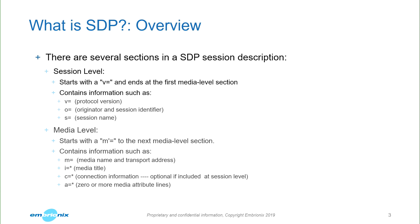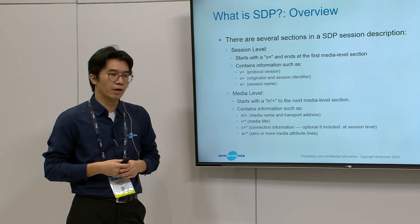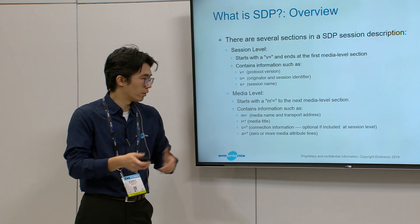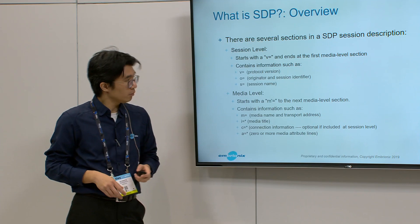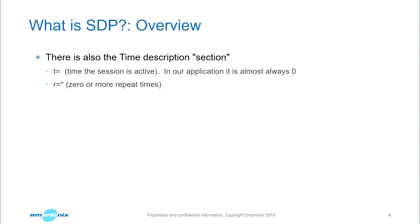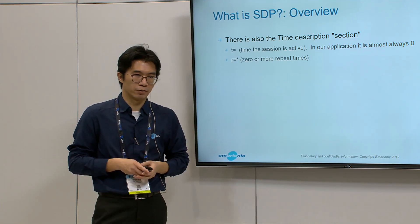The media level — this is where it's most interesting for everyone doing 2110. It contains the media name and the transport address. You can have a title if you want, and also if you want to supersede the session level, you can have connection information — this is where the IP address is. 2110 uses a lot of different attributes. There's also the timing section. For most 2110 installations, the timing is always fixed at zero because it's always permanent.